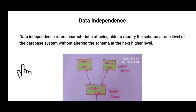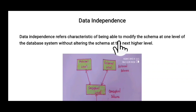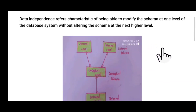If you are making changes in the database and in the application, changes need to be made in the application as well. With the concept of data independence, you can make changes in the database. Data independence refers to the characteristic of being able to modify the schema at one level of the database system without altering the schema at the next higher level.